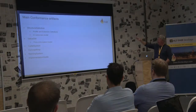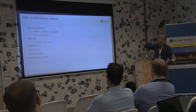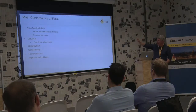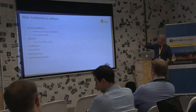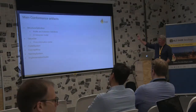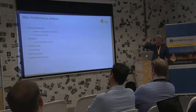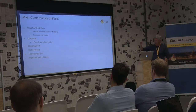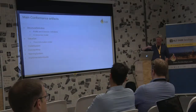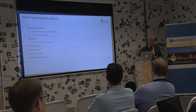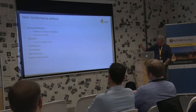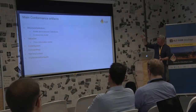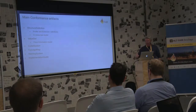To summarise, the conformance artefacts you'll come across in profiling: StructureDefinition — the underlying description of profiles and extension definitions; ValueSet — defines a subset of terms; CodeSystem — the definition of a term; ConceptMap — mapping between different concepts in a computable way; NamingSystem — used to define an identifier like the NHI in New Zealand or NHS number in the UK; and the ImplementationGuide — which brings everything together. There are others, but those are the main ones.